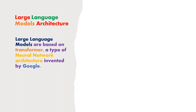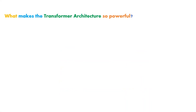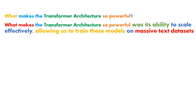Let's explore the LLM's architecture. Large language models are based on transformer architecture, which is a type of neural network architecture invented by Google. LLM models are trained on a massive amount of text data. What makes the transformer architecture so powerful is its ability to scale effectively, allowing us to train these models on massive amounts of text data.